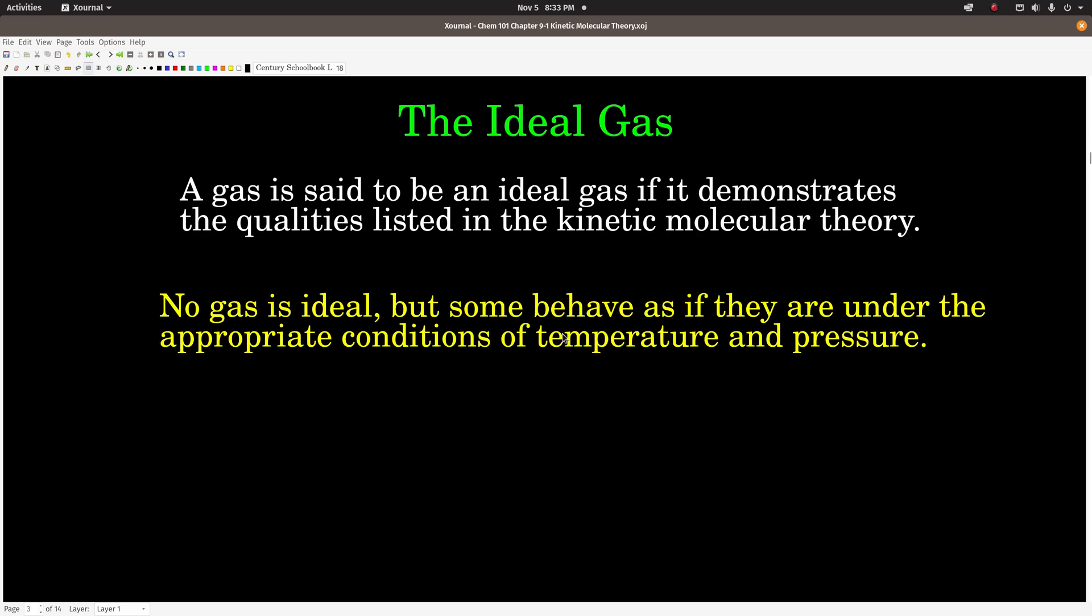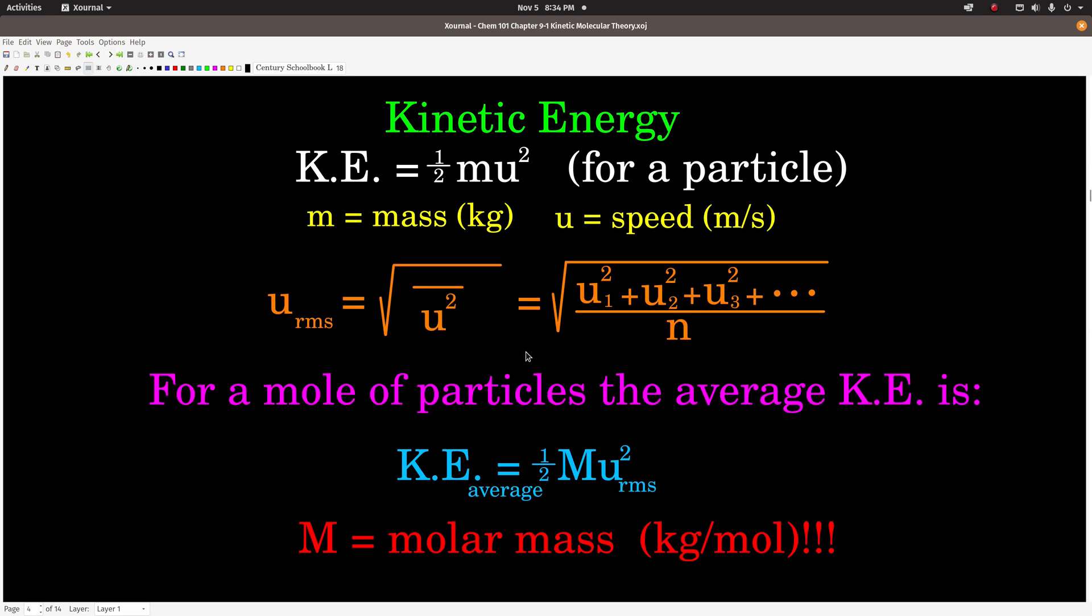So when we talk about an ideal gas, we're talking about a gas that obeys these properties of the kinetic molecular theory: really small, don't interact with each other. There is no such thing as an ideal gas, but an amazing number of gases actually behave as if they are ideal gases. Real common gases like the gases that comprise air, nitrogen, oxygen, carbon dioxide, argon, under normal conditions, room temperature and pressure, behave very similarly to what an ideal gas would behave like.